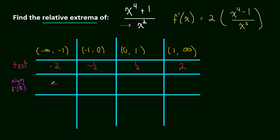We plugged in negative 2, we figured out the derivative was negative. If we plug in negative 1 half, well negative 1 half to the 4th is going to be 1 over 16 minus 1, that's negative. And then over negative 1 half to the 3rd, which is negative 1 8th. So this is a negative over a negative, that's a positive.